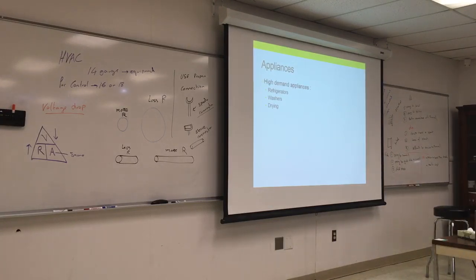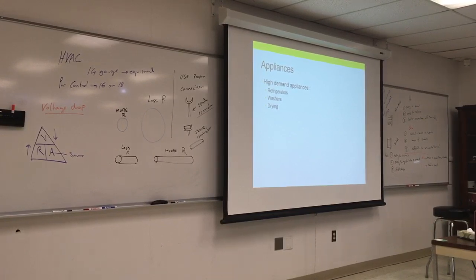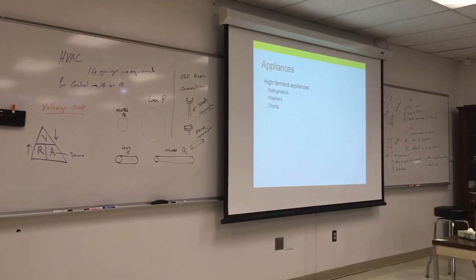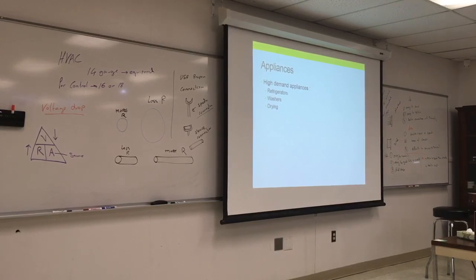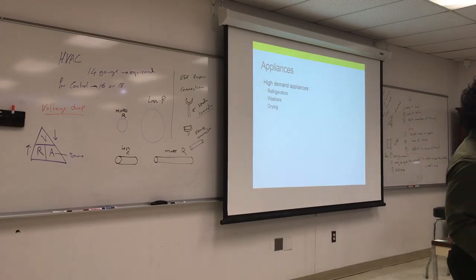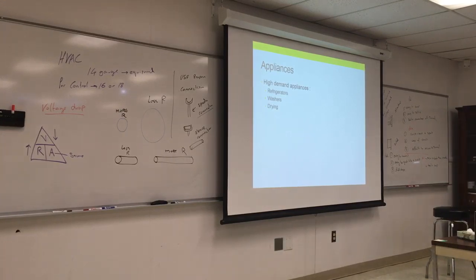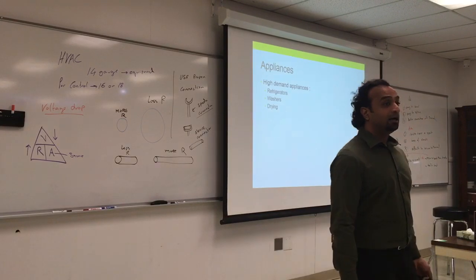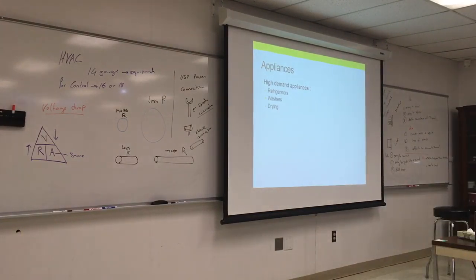Drying is another issue because there's a motor and a heating coil. Gas dryers are not really recommended anymore because of safety, inspection requirements, and because dryers shake a lot. That vibration can transfer to the pipes and the paste around the pipe joints will deteriorate and fall apart, eventually causing gas leaks. Gas leaks are fatal, so people decided they might as well just use an electrical dryer.